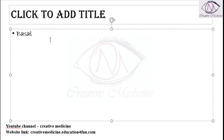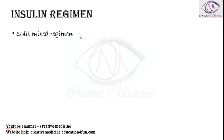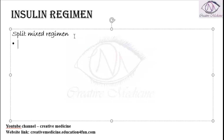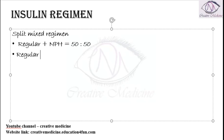In the split mixed regimen, two types of insulins are combined together in a particular ratio. For example, we can combine regular insulin with NPH insulin in a ratio of 50:50, or we can combine regular insulin with NPH insulin in a ratio of 30:70.